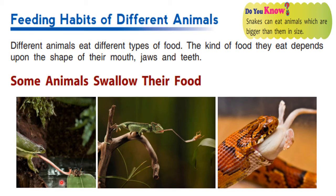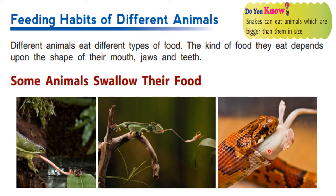Frogs eat insects such as flies, moths, snails, worms, etc. They use long tongues and sticky saliva to catch their prey. Lizards are also carnivorous — they eat ants and spiders. Snakes can eat animals which are bigger than them in size. Frogs, lizards and snakes do not use teeth to bite or chew their food; they swallow it. Frogs and lizards catch their prey with a sticky tongue, and the snake can open its mouth very wide to swallow its prey.